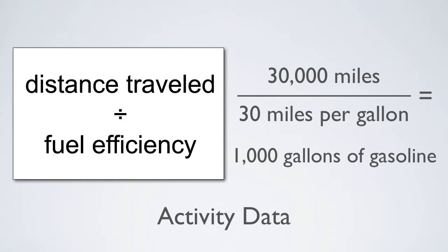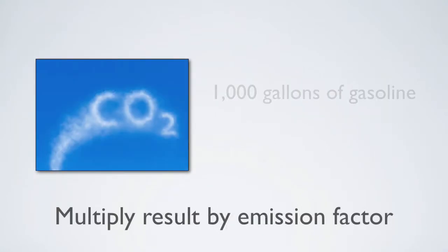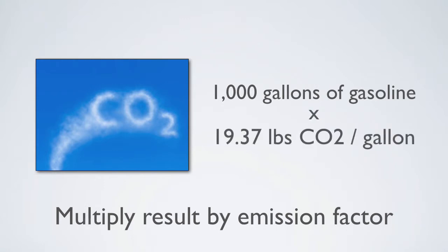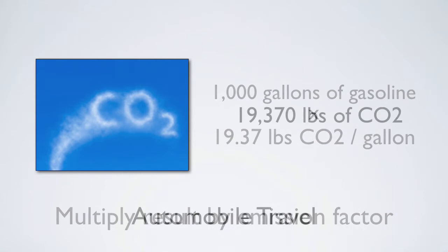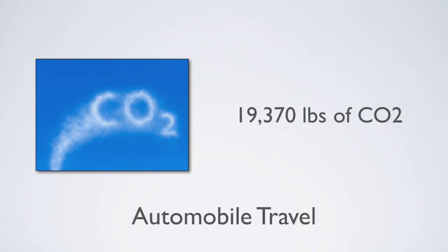Now that we know the amount of gasoline consumed, we simply multiply this by our emission factor. 1,000 gallons of gasoline times 19.37 pounds of CO2 per gallon gives us 19,370 pounds of CO2. Since we're dealing with CO2, we don't need to multiply by the global warming potential because the global warming potential for CO2 is 1.